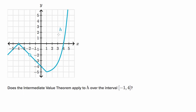We have the graph of y equals h of x, and they ask us: does the intermediate value theorem apply to h over the closed interval from negative one to four? We could first remind ourselves what the intermediate value theorem is, but you just have to remember that the intermediate value theorem only applies over closed intervals where the function is continuous.